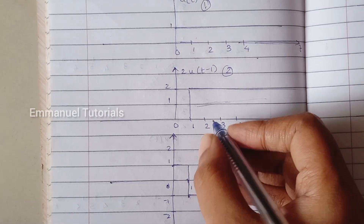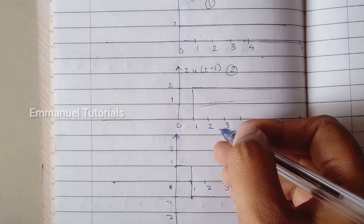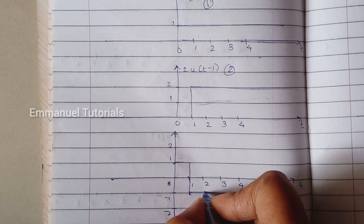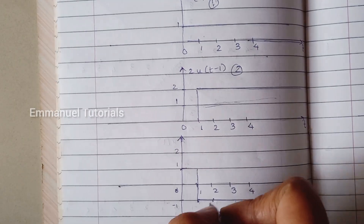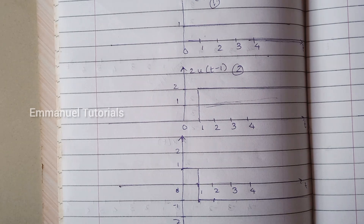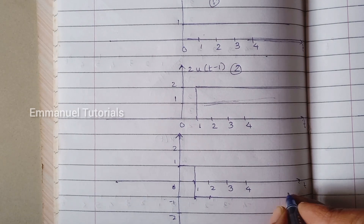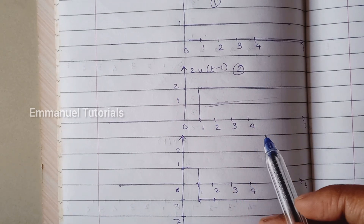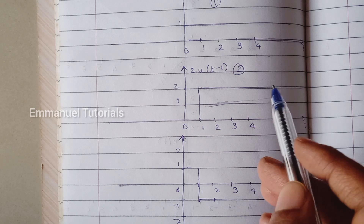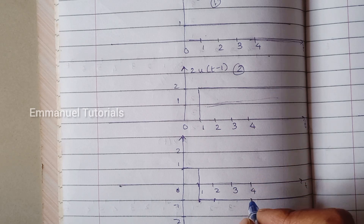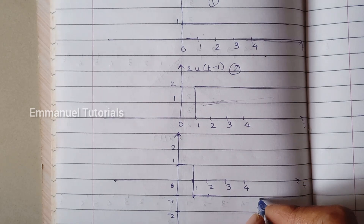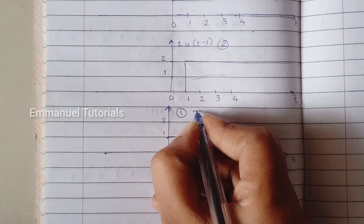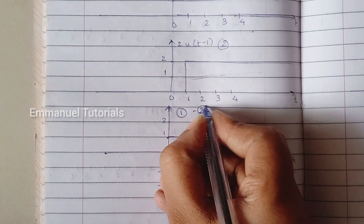At t=2, the first signal's amplitude is 1 and the second signal's amplitude is 2, so again our amplitude is going to be minus 1. And this is going to continue to infinity — the first signal is 1 and the second signal is 2, so 1 minus 2 is minus 1. So that is what I have drawn here. So this is the result of u(t) minus 2·u(t-1).